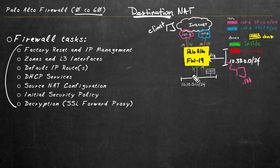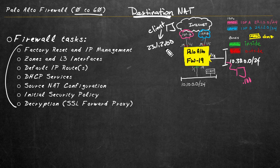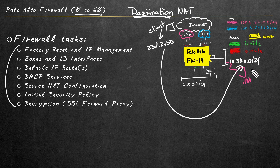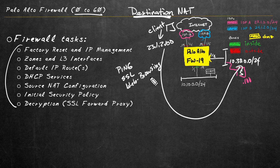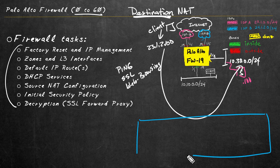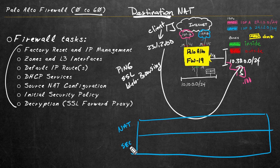So as far as a game plan, here in my lab environment, let's use 23.1.2.100. If a client connects with HTTP to that IP address, we want the firewall to swap out the destination IP address over to 10.30.0.100 for the server and then forward the traffic. In addition to having our destination NAT policy rule in place, we also need to set up a security policy rule that permits that flow of traffic — allowing ping, SSL (HTTPS), and web browsing (HTTP on TCP port 80).